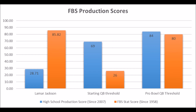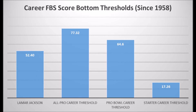His career FBS score is calculated by adding up all of his seasons — freshman year, sophomore year, and junior year — then dividing by three. When it comes to Lamar Jackson's career FBS score, a 52.40 out of 100, he doesn't quite hit the All-Pro or Pro Bowl career threshold. He did have a very good junior year where he hit a Pro Bowl threshold, but over the course of his entire college career, he wasn't getting it done in terms of All-Pro and Pro Bowl potential in his overall data profile.